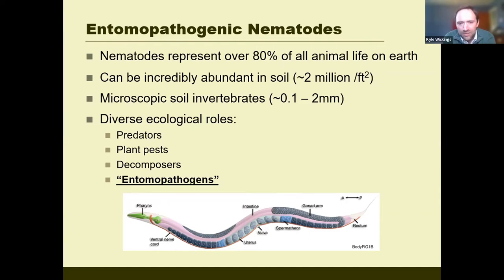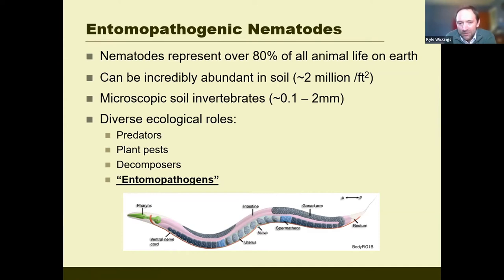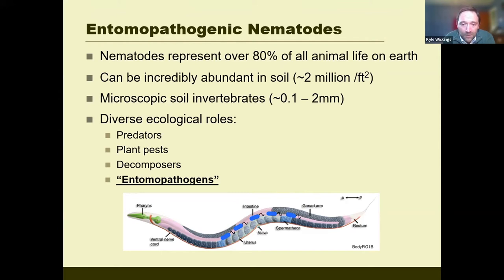The entomopathogenic nematode itself is not just the nematode, but also the bacteria that live in its gut. Without this symbiosis between the bacteria and the nematode, the biocontrol function wouldn't happen — you're really talking about multiple organisms with a symbiotic relationship. The nematode is very mobile in moist soil — like an aquatic organism that moves well through the soil matrix — and it's the vehicle for moving these bacteria around. It's really the bacteria that do the killing.